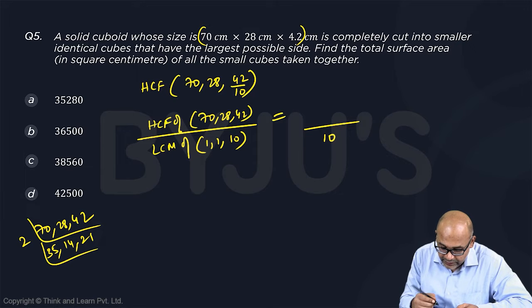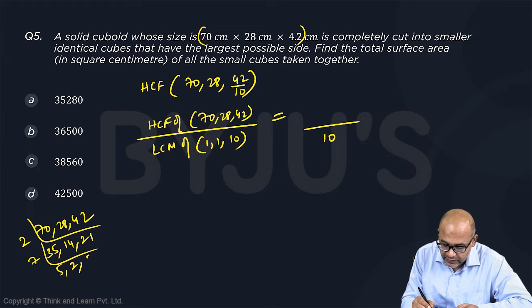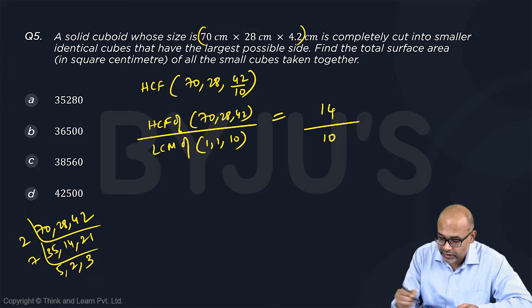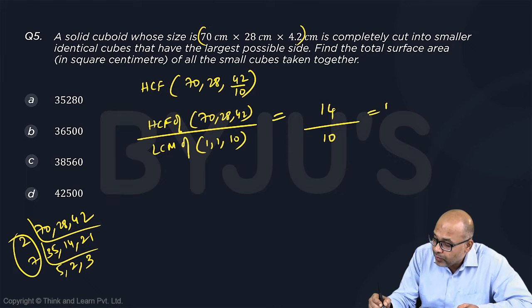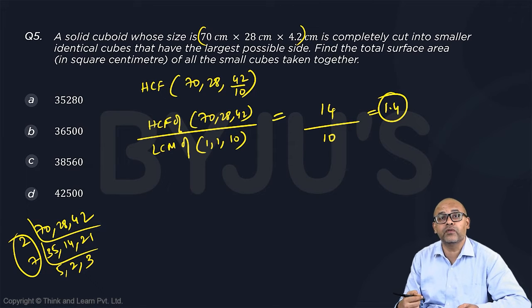Then 7 goes, 7 goes, 7 5s are, 7 2s are 14, 7 3s are 21. So this is 14, 7 2s are 14. So this is 1.4. So the highest common factor is 1.4.